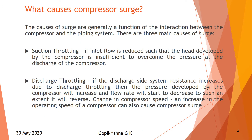The causes of surge are generally a function of interaction between the compressor and the piping system. There are three main causes of surge. First is suction throttle — if the inlet flow is reduced such that the head developed by the compressor is insufficient to overcome the pressure at the discharge side. Second is discharge throttling — if the discharge side system resistance increases due to discharge throttling, then the pressure developed by the compressor will increase and the flow rate will start to decrease to such an extent that it will reverse.